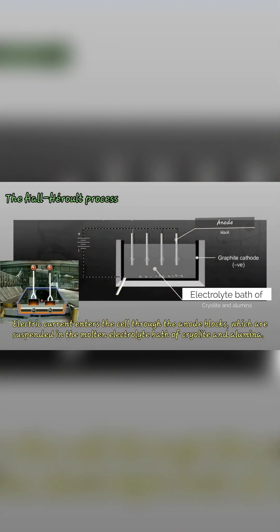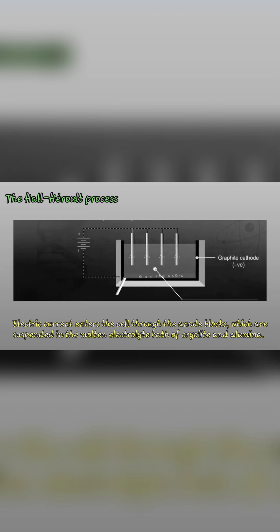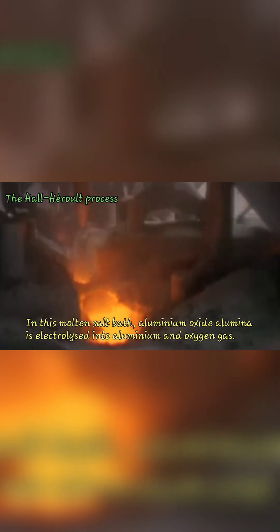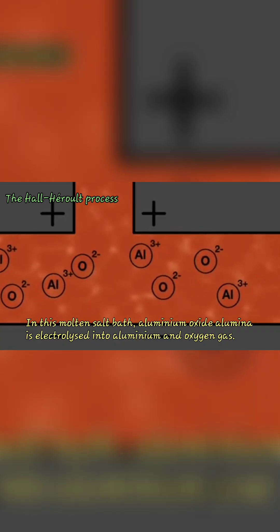Electric current enters the cell through the anode blocks, which are suspended in the molten electrolyte bath of cryolite and alumina. In this molten salt bath, aluminium oxide is electrolyzed into aluminium and oxygen gas.